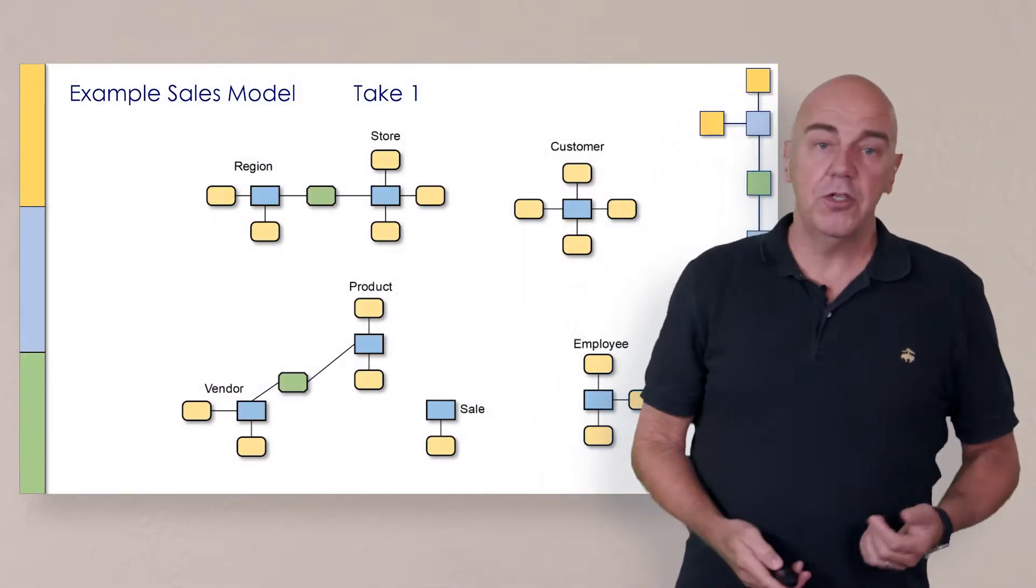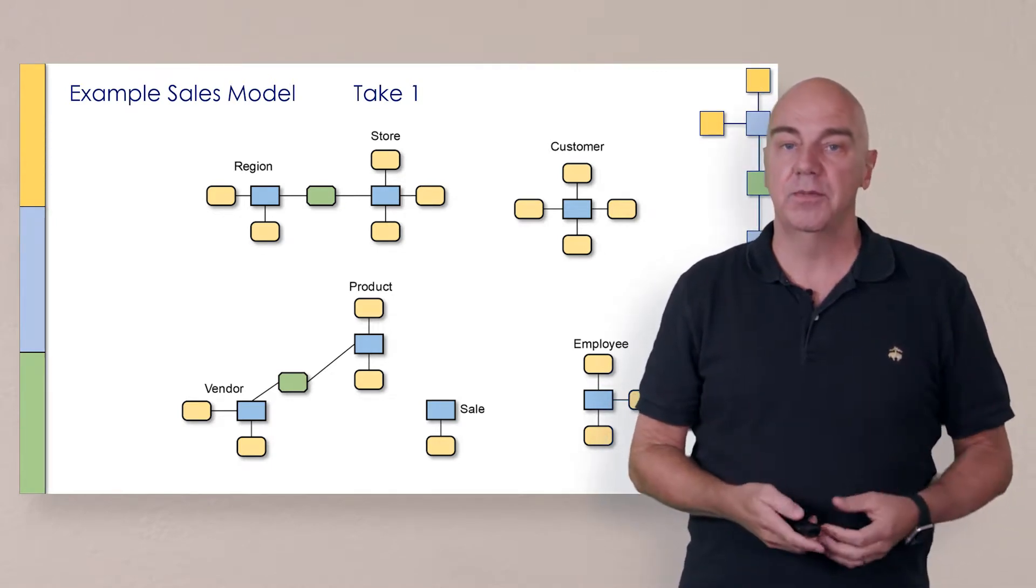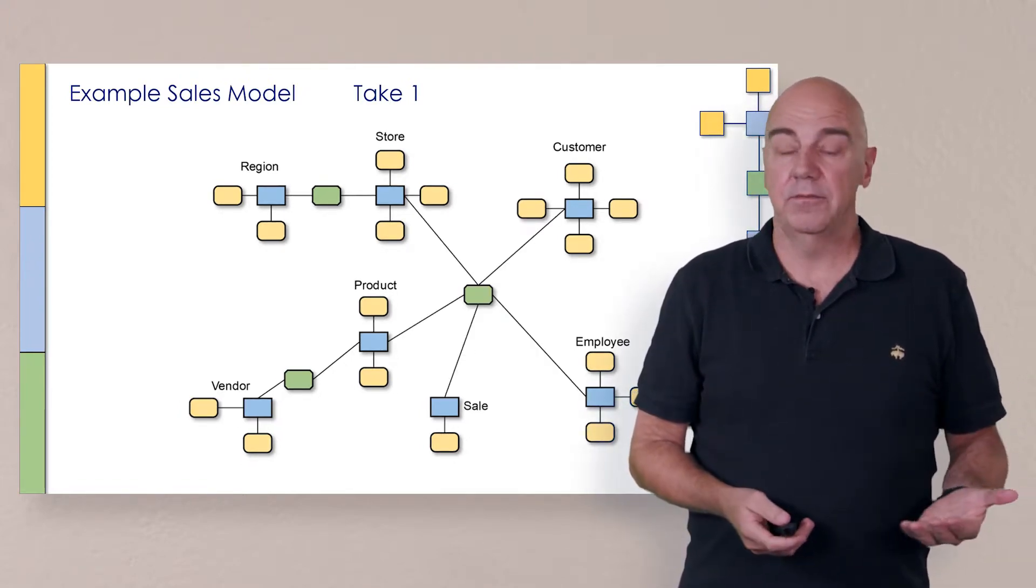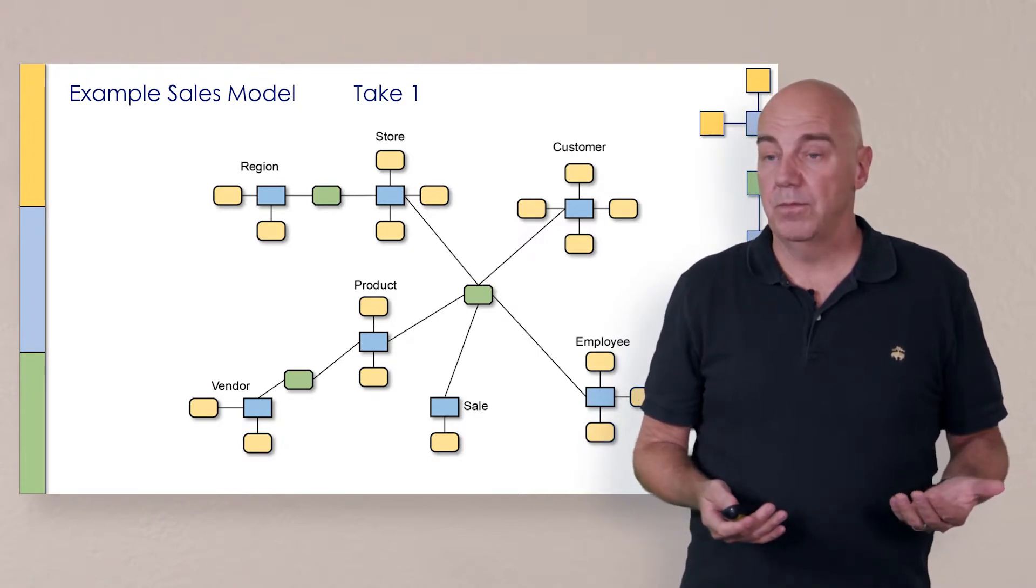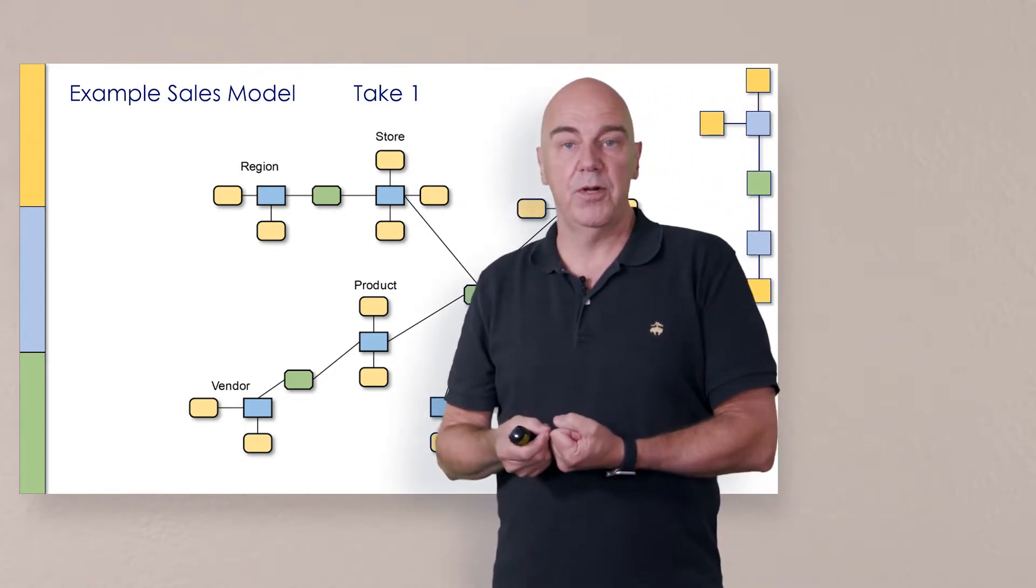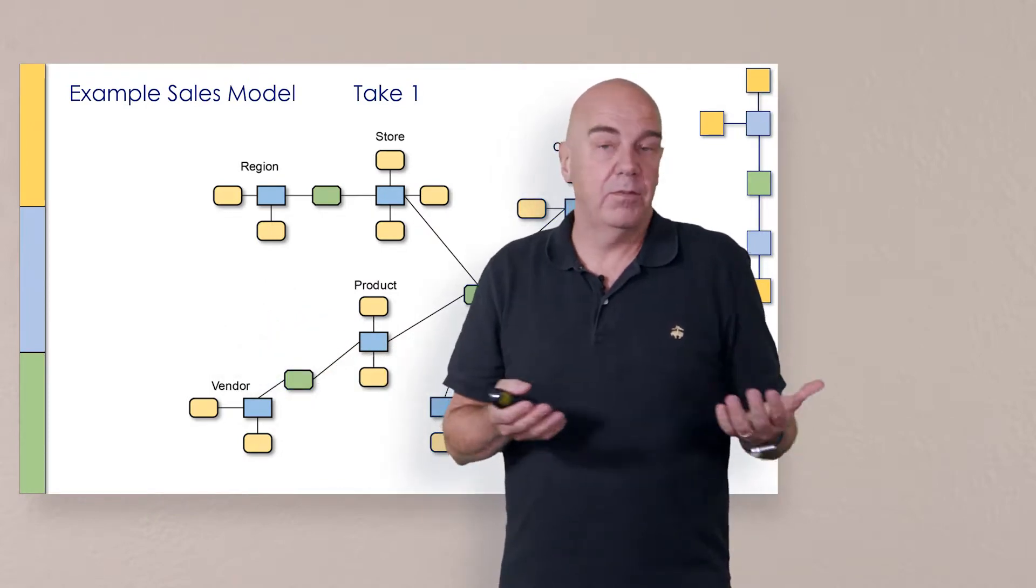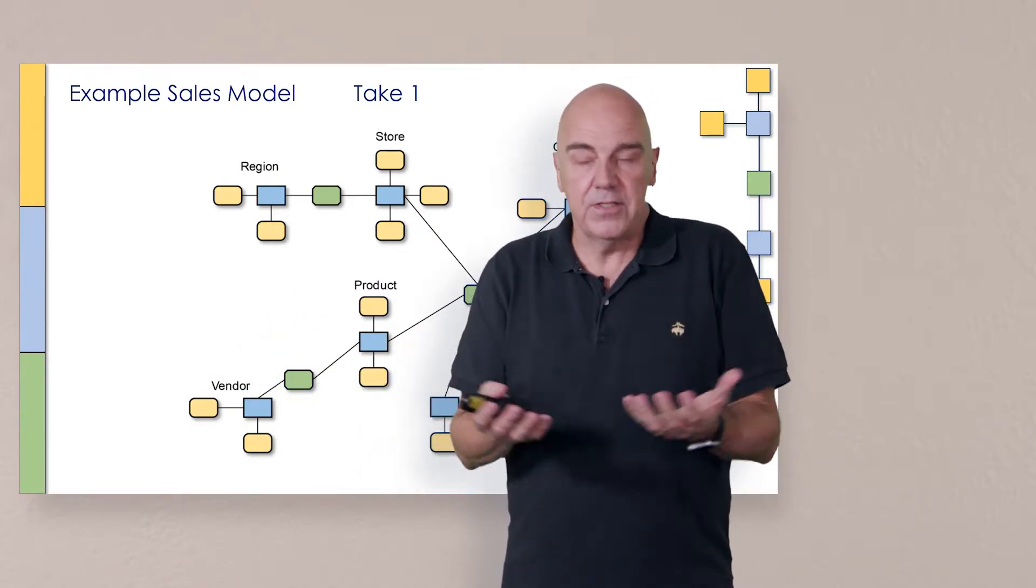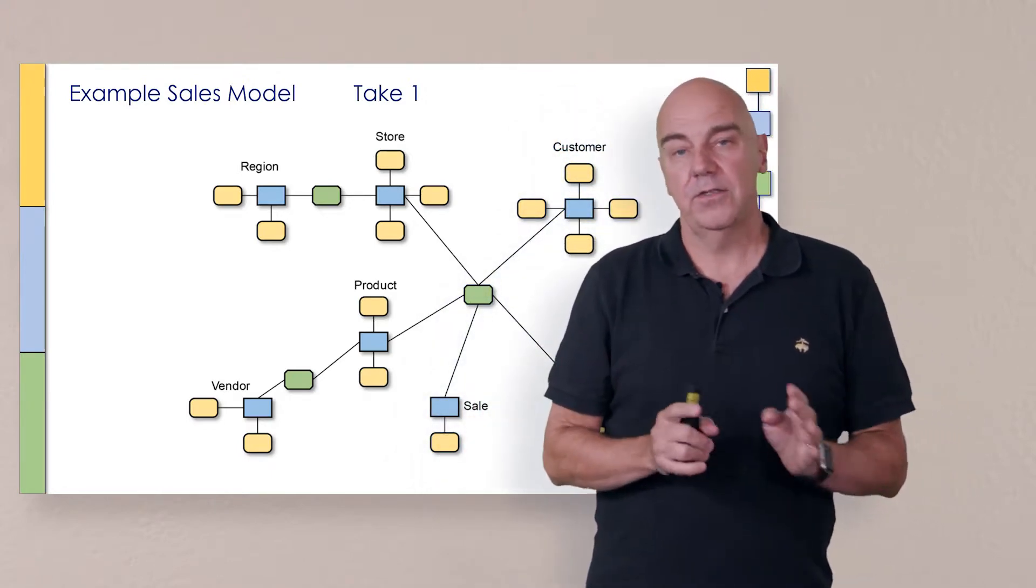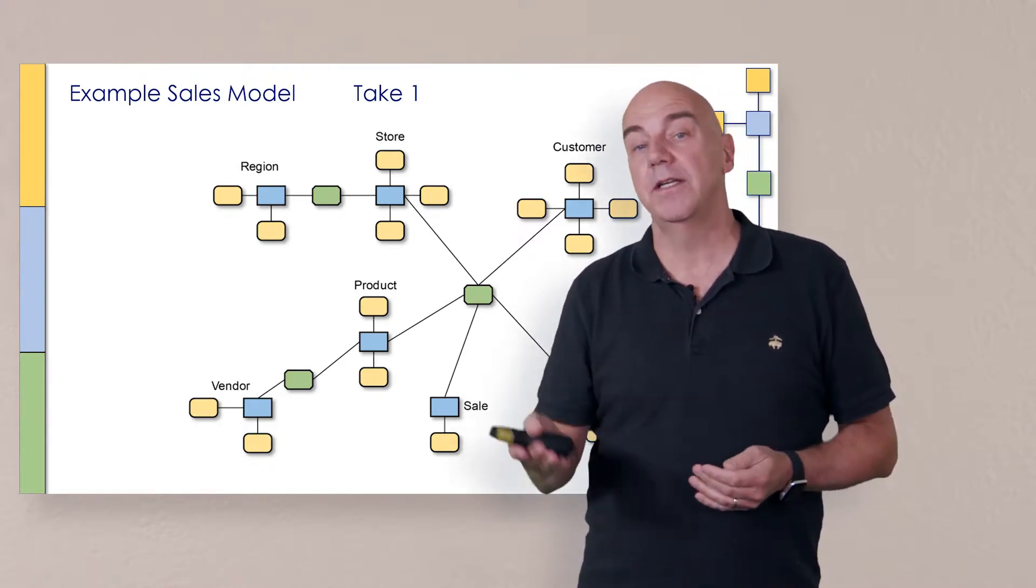So we determined that maybe having all separate links doesn't make sense. Maybe we want to look at how do things naturally come together. Well, as it turns out, a sale actually associates product and store and customer and employee all at the same time. I mean, if you think about it, I walk into a store, I purchase a set of products, I get checked out by a clerk who works there, an employee, and I'm of course physically in a store. So these things all come together at the same time. But remember, the second part of our analysis is to adjust for sparsity because we want to try to avoid sparsity, null records, and also redundancy.